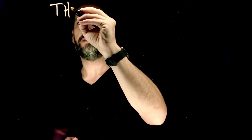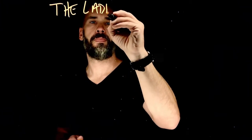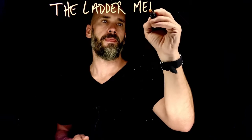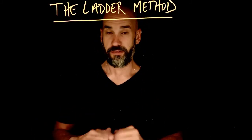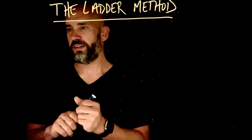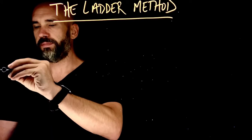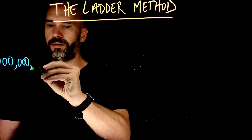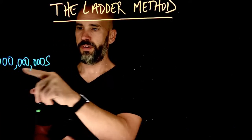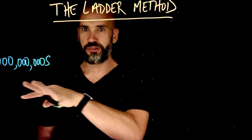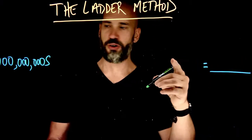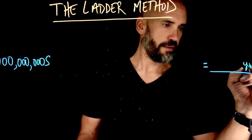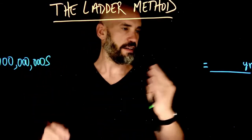Whenever we're doing this, we start with something called the ladder method. Whenever we're using the ladder method, we have a very precise set of steps. The first step is always to start with what we have — so we have a billion seconds. And then once we have where we're starting, we always want to remind ourselves where we're going. What is the unit we're trying to get to? We have seconds; we're trying to get to years.